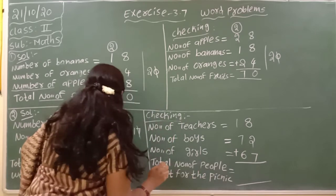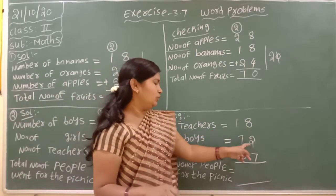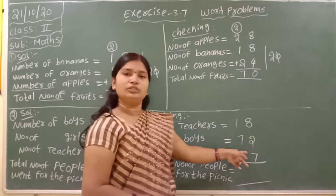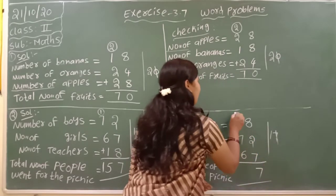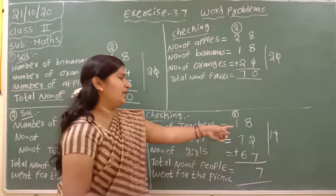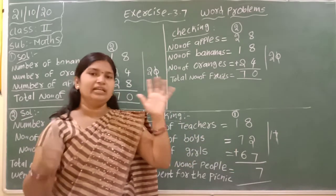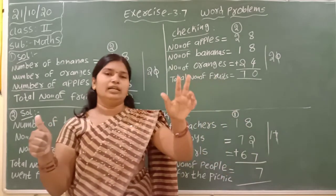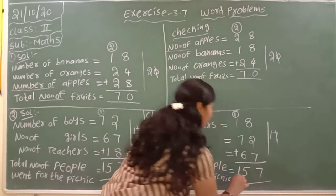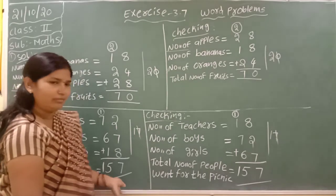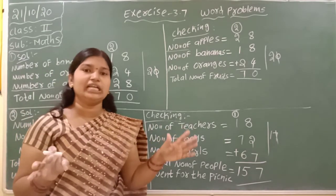How many members went for the picnic totally? Add ones place: 8, 2, 7. Eight plus two is ten, ten plus seven is seventeen. Write seven, carry one. One plus one is two, two plus seven is nine, nine plus six — nine in the mind, take six fingers — ten, eleven, twelve, thirteen, fourteen, fifteen. The answer is one hundred and fifty-seven. Here also you get the same number. If we change the order of the numbers, our answer does not change in addition.